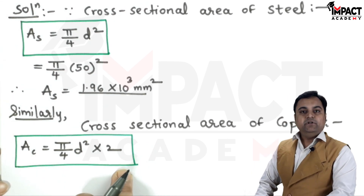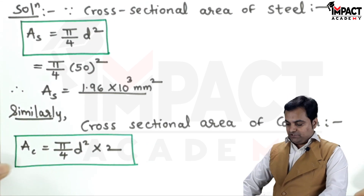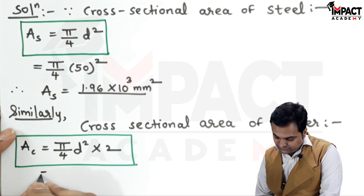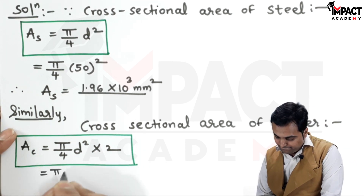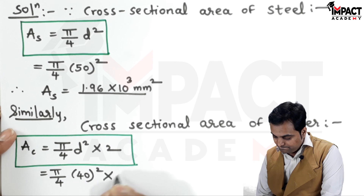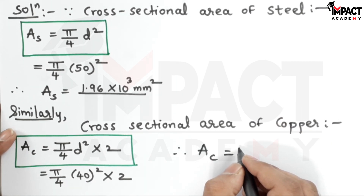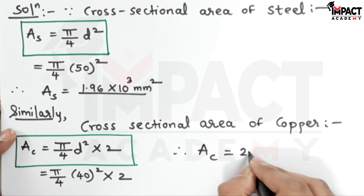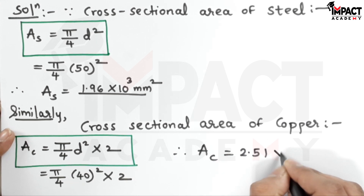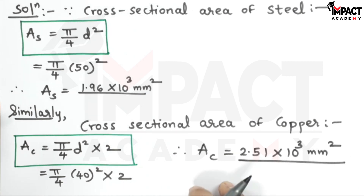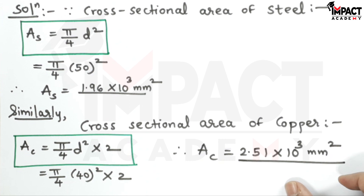For copper, I have multiplied by 2 because we have two copper rods as shown in the diagram, and the diameter is 40 mm. The total area of copper comes out to be 2.51 × 10³ mm².